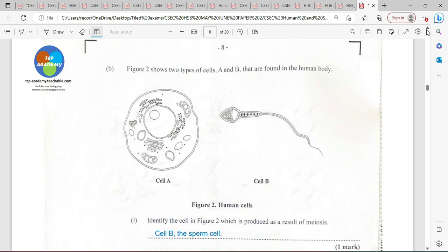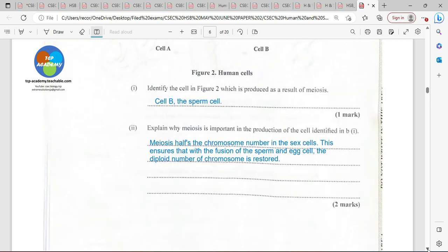Identify the cell in figure two which is produced as a result of meiosis. It's going to be cell B. To name it, it is a sperm cell. Explain why meiosis is important in the production of the cell identified. Meiosis halves the chromosome number in the sex cells. This ensures that with the fusion of a sperm and the egg cell, the diploid number of chromosomes is restored. Now, this is very important to make sure that the organism is true to form.